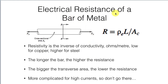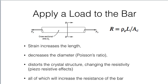The electrical resistance of a bar of metal goes up depending on how you stretch it. If it gets longer, the resistance goes up. If you make the transverse area smaller, the resistance goes up. And if you change the state of the bar so that its resistivity changes, that will also cause the resistance to go up. When we apply a load to that bar, the strain increases the length, decreases the diameter, and distorts the crystal structure — so the resistance goes up.